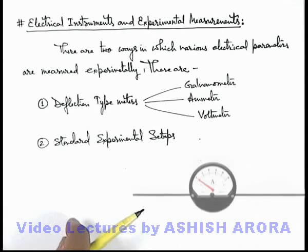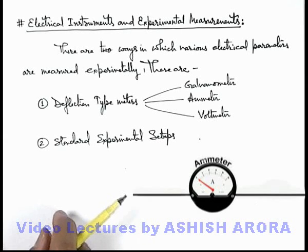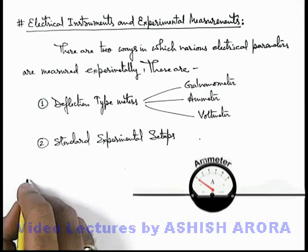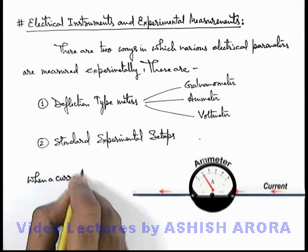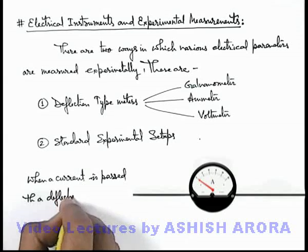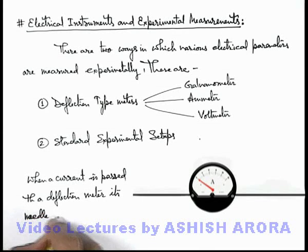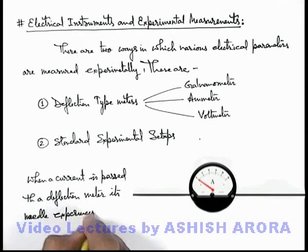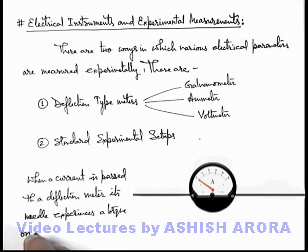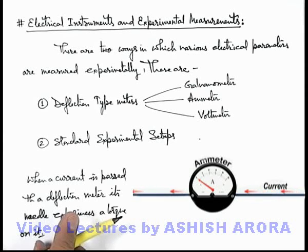Right now, just have a look at a deflection type meter. This picture is showing you a typical deflection type meter. The basic characteristic of this meter is that when a current is passed through a deflection type meter, its needle experiences a torque on it, and with that torque there is a deflection in the needle. As you can see in this clip, when a current passes through the deflection type meter, the needle is deflected.